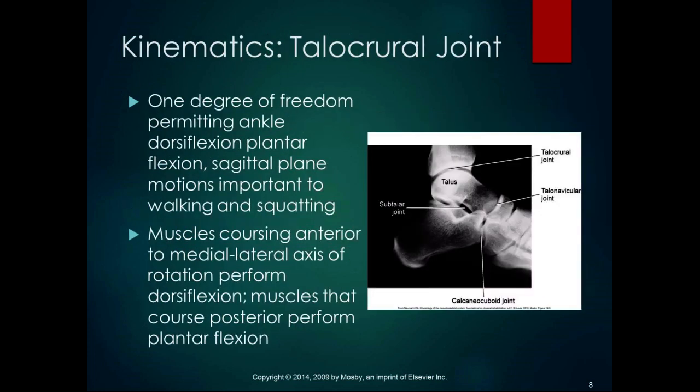The talocrural joint has one degree of freedom — it permits ankle dorsiflexion and plantarflexion in the sagittal plane. Those motions are important to walking and squatting. Muscles that pass anterior to the medial-lateral axis of rotation perform dorsiflexion, and muscles that pass posterior perform plantarflexion. The malleoli are your points of reference: anything anterior to the malleoli does dorsiflexion, anything posterior does plantarflexion.